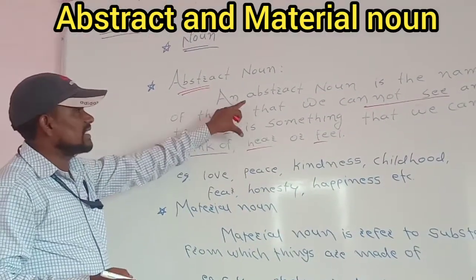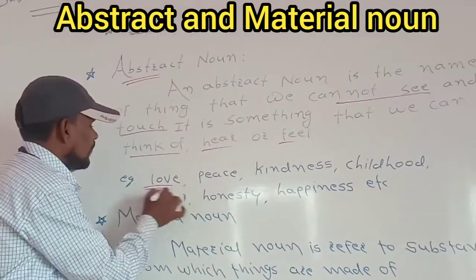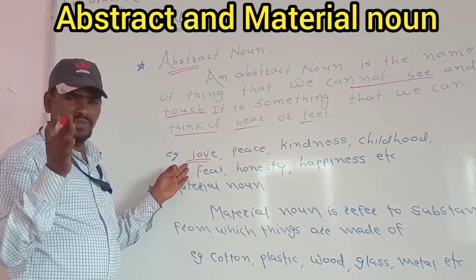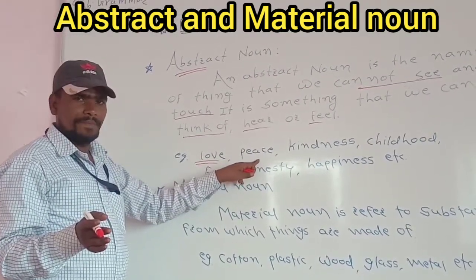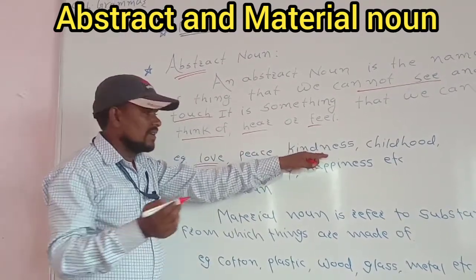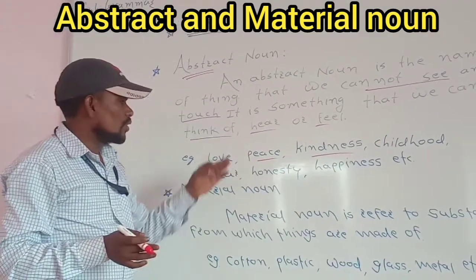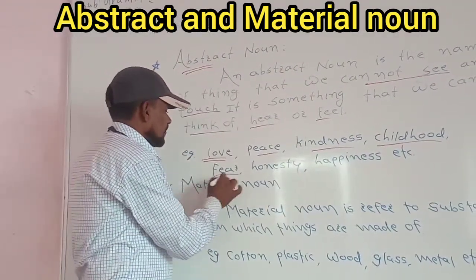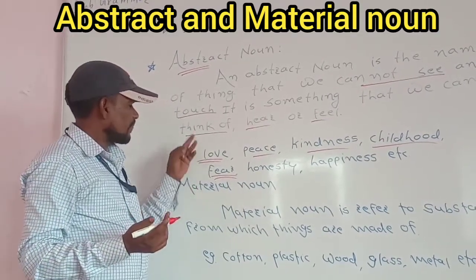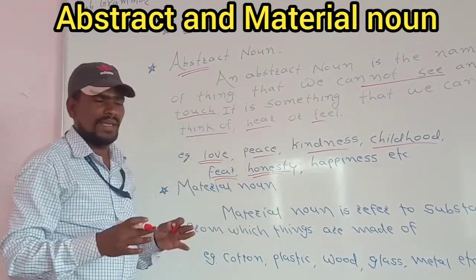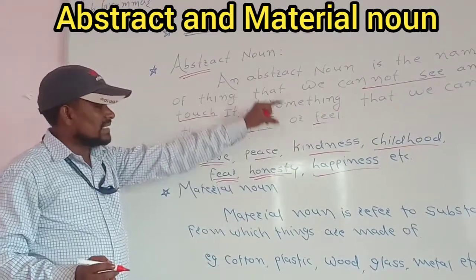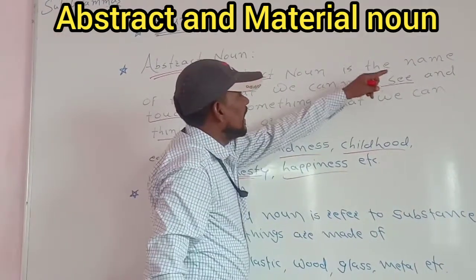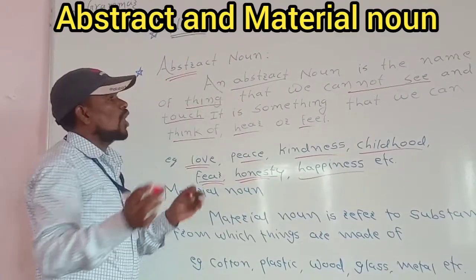This is the definition of abstract noun. For example, love is a feeling. You have to copy down this definition with this example and learn it. An abstract noun is the name of a thing that we cannot see and touch.